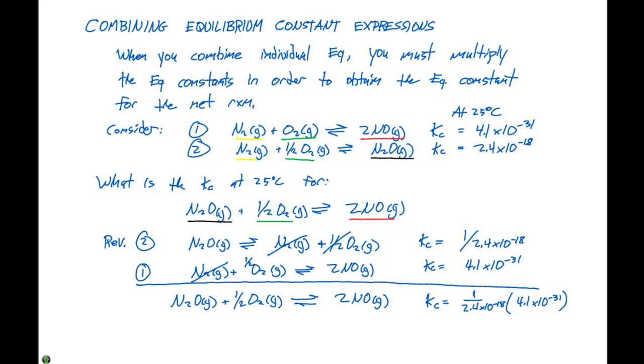When we go through and multiply these out, our Kc is going to equal 1.7 times 10 to the minus 13.